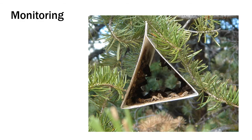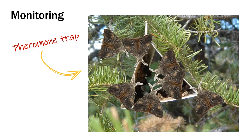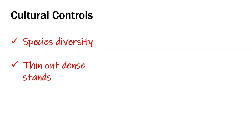In areas where outbreaks have occurred in the past, monitoring populations of the Douglas fir tussock moth can help forest managers keep tabs on the pest. You can set up pheromone traps in the spring to attract males — the number of males in the trap gives an indication of population size. You can prevent an outbreak using cultural controls. A good strategy for urban environments is to plant a mix of different tree species. You can also thin out dense stands of Douglas fir or other host trees to make it harder for the tussock moth to spread.